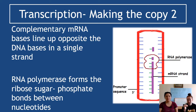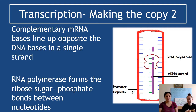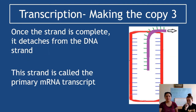RNA polymerase forms the ribose-sugar phosphate bonds between these nucleotides — as the nucleotides come in, they get joined together by RNA polymerase. Remember: when we talked about DNA we said DNA polymerase; we are now talking about RNA polymerase. If you just say 'polymerase' you won't get marks — you have to be specific. Several of you made this mistake in your homework, so make sure you specify whether it is DNA polymerase or RNA polymerase.